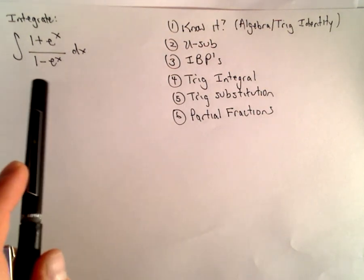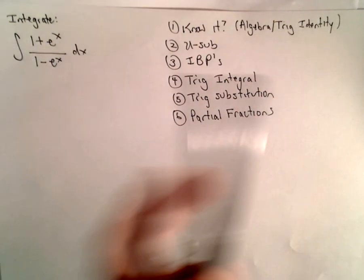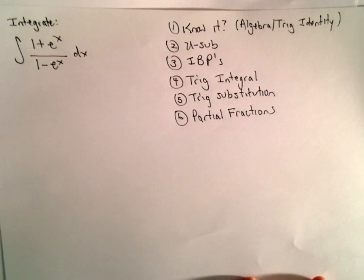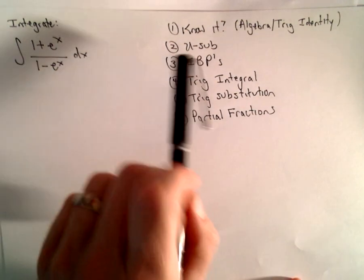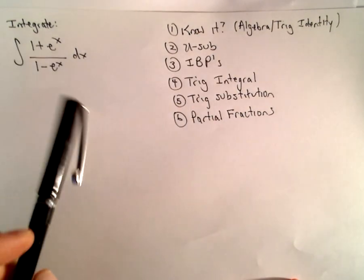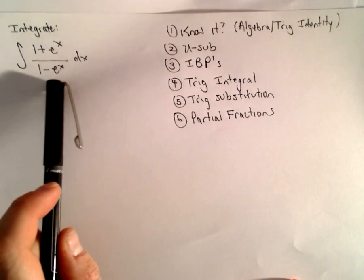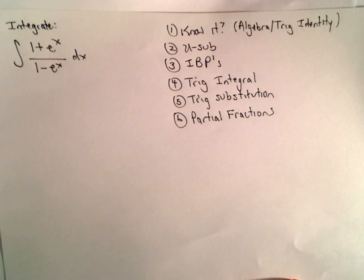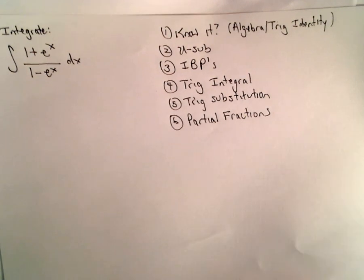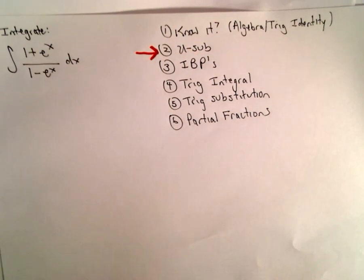Then I think: is there any sort of algebra, or maybe some sort of trig identity I can use to turn it into something that I know? Maybe there is some algebra — I'm not positive off the top of my head. There's no trig, so certainly it's not a trig identity, but that's something I keep in the back of my mind. If I don't know it, the next thing I think of is: can I use a u-substitution? Maybe I could let u be e^x, or 1 + e^x, or 1 - e^x.